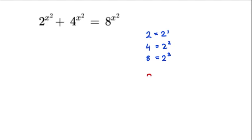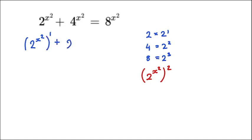We can convert 4 to the power of x squared as 2 to the power of 2x squared all squared, and for the 8 we apply the cube. So we rewrite the equation as 2 to the power of x squared all to the power of 1, plus 2 to the power of x squared all to the power of 2, is equal to 2 to the power of x squared all to the power of 3.